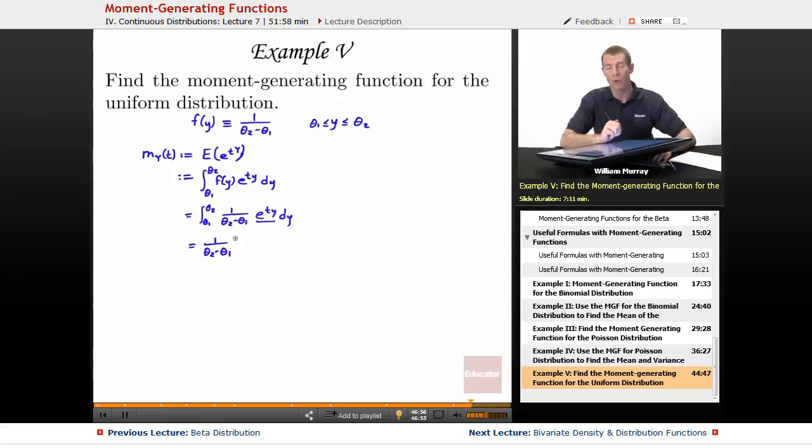Now what's the integral of e to the ty? Remember here our variable is y, we're integrating with respect to y. And so the integral of e to the ty, if you do a little substitution there, I'm going to go ahead and do it in my head, it's just e to the ty times 1 over t. That's because we're thinking of t as being constant here, y is the variable of integration. So it's just 1 over t. If you took the derivative of that with respect to y, you'd get back to e to the ty.